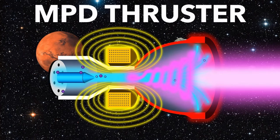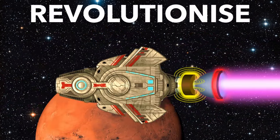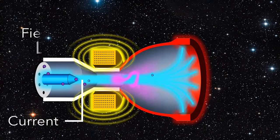This is a magnetoplasma dynamic thruster, and it could soon revolutionize space travel. You're about to learn how it works in four steps.